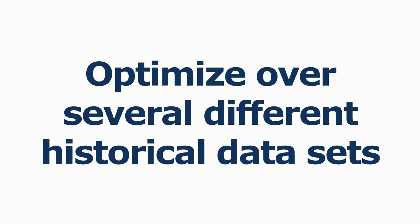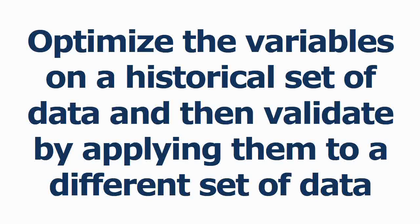Second, we can optimize over several different historical data sets and identify those strategy variables that produce profitable results across all of them — look for overlaps and select a variable mix that has a good result in each of the test periods. Third, we can optimize the variables on a historical set of data and then validate that they continue to perform well by applying them to a different set of data. This is called out of sample testing.